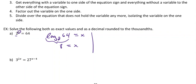Just another way we could have done that though — we could have done that by making them the same base. So we could have written this as two to the power of x is equal to two to the power of eight instead of 64, and then set the exponents equal to each other. So then x is equal to eight.